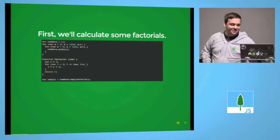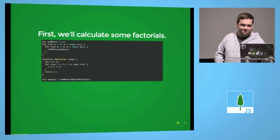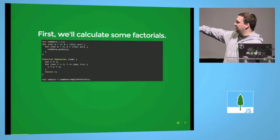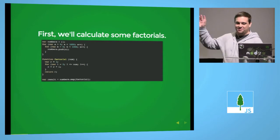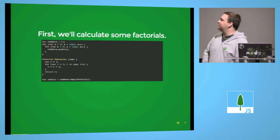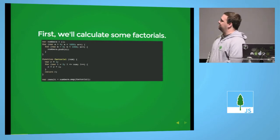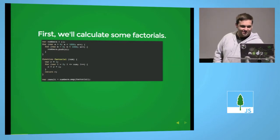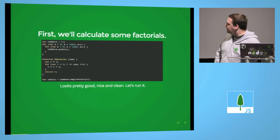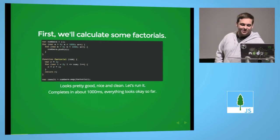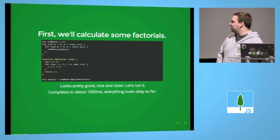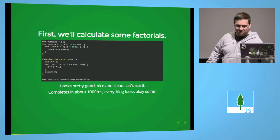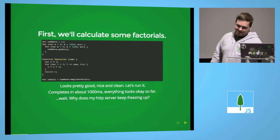First, factorials. I'm calculating a whole bunch of factorials and running it through the numbers.map thing. A lot of people, for some odd reason, seem to think that a callback is magically async — which it's not. That will block your process. It completes in about 100 milliseconds, so it doesn't seem too bad, but it kills my HTTP server, and I don't want that.